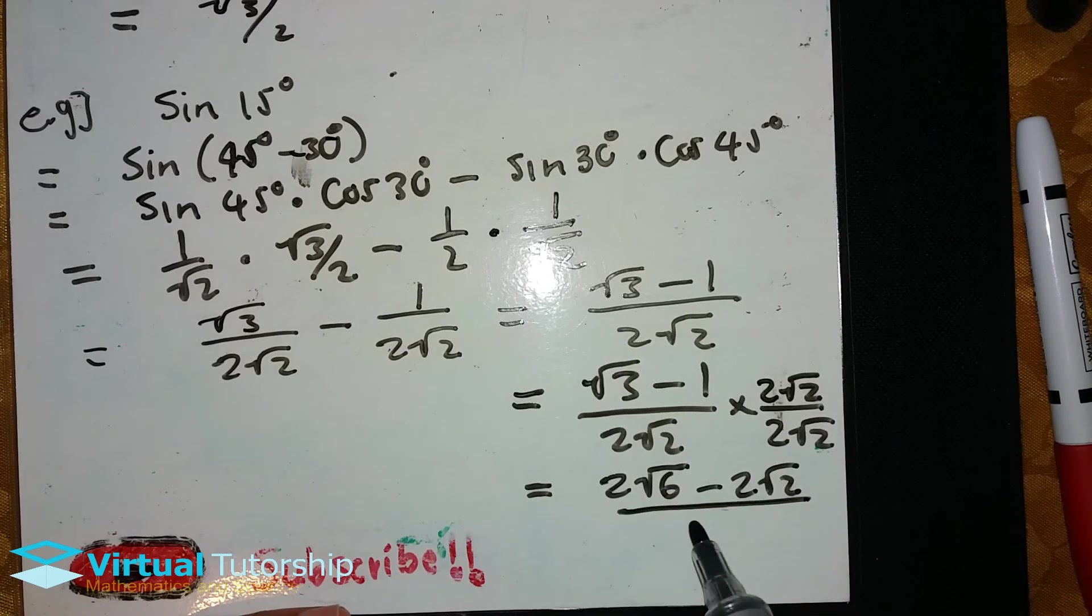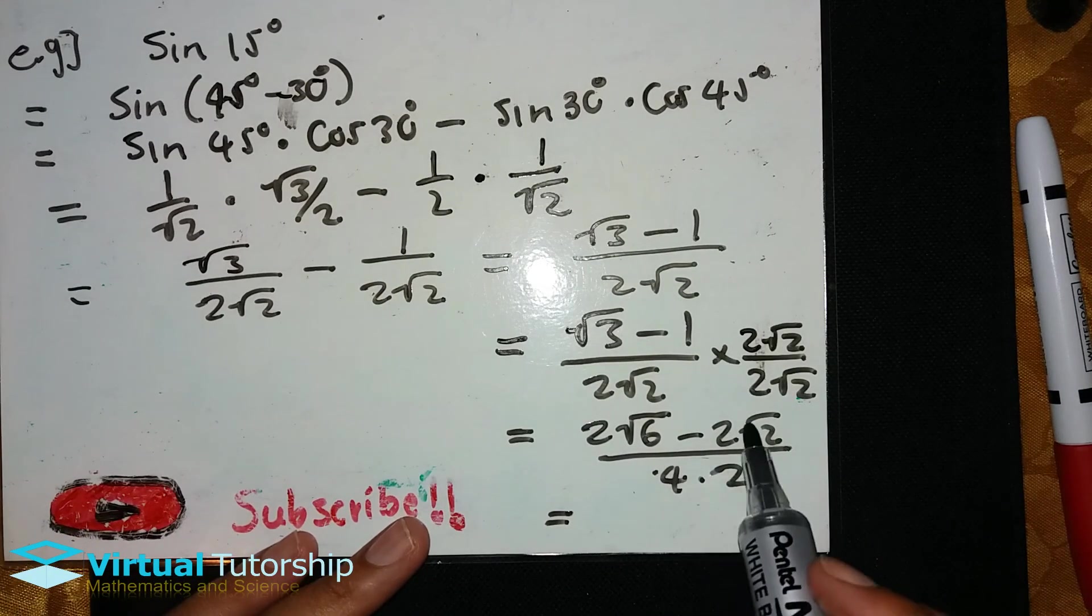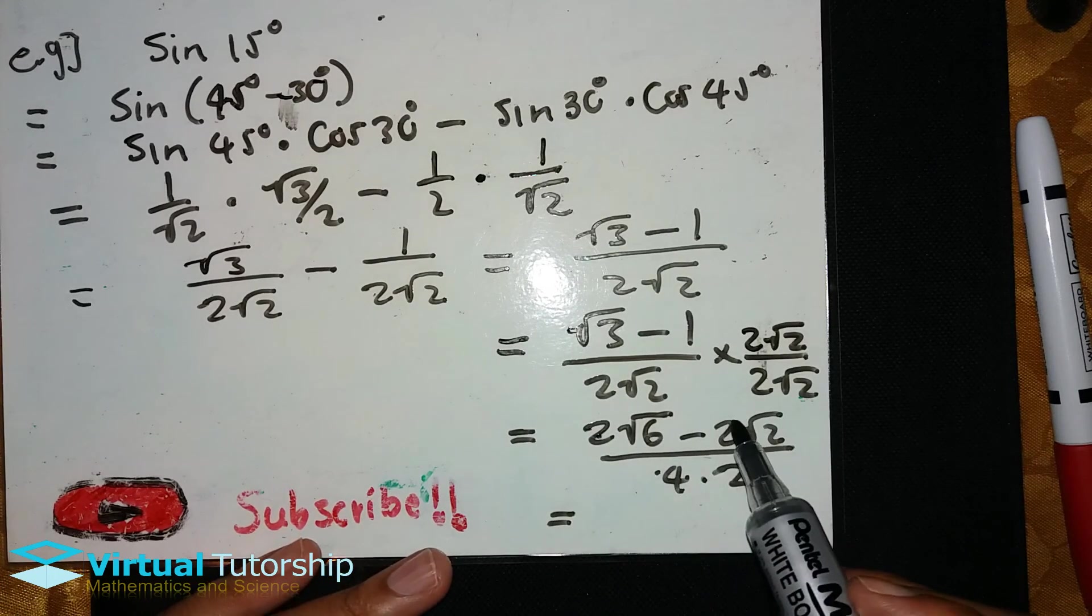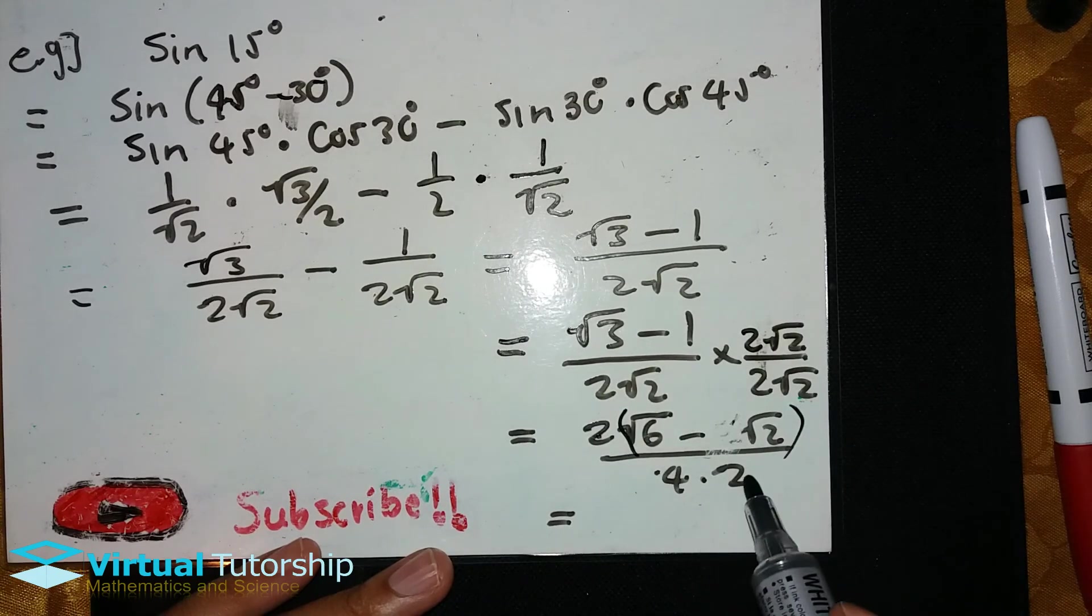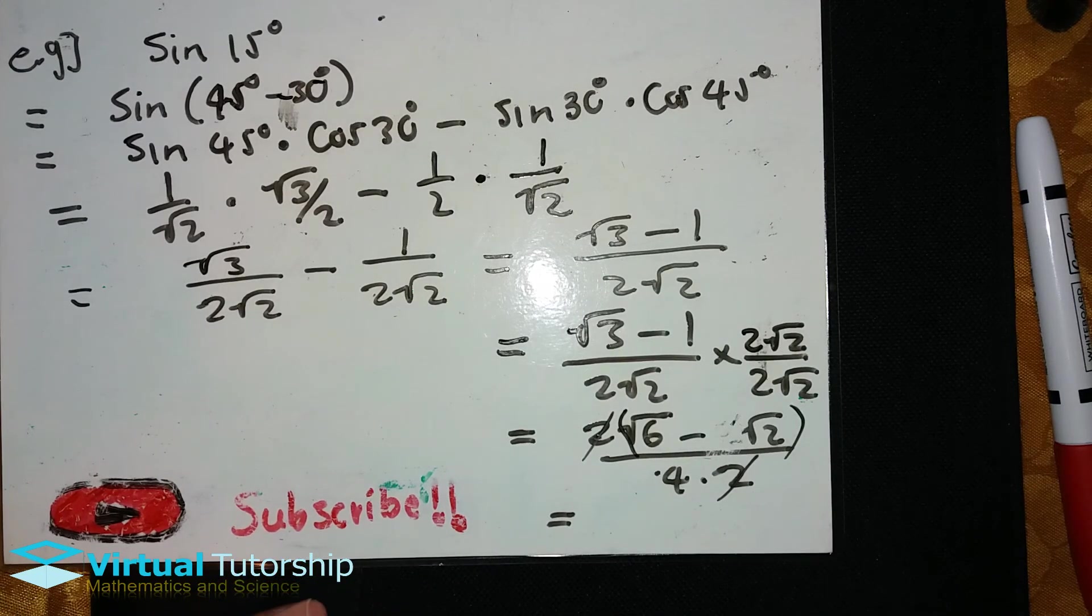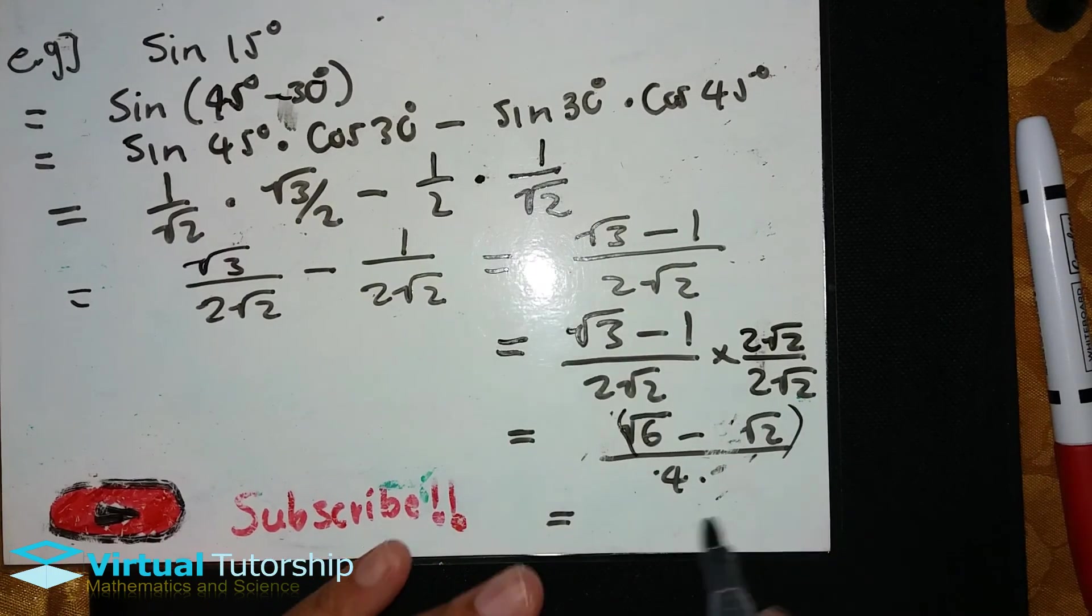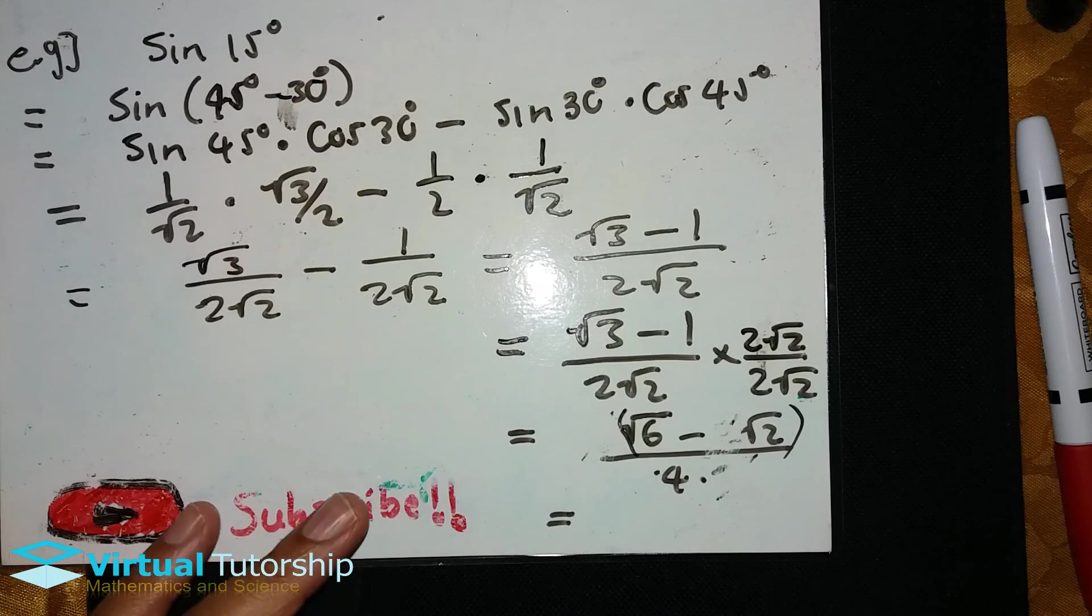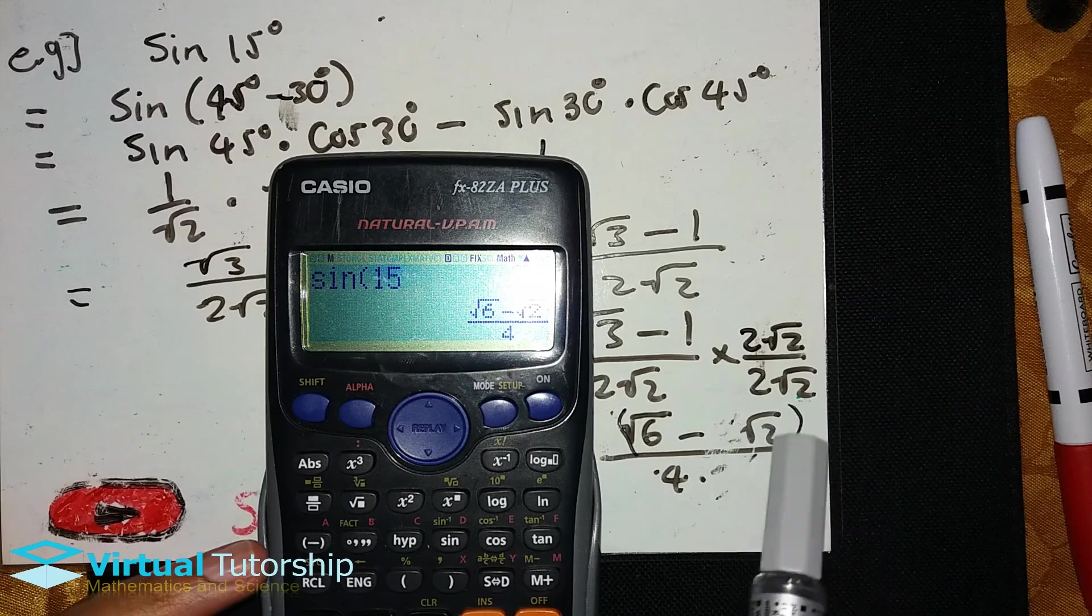So 4 times 2 equal to. This common factor of 2 we can factor out. The common factor of 2 we can cancel, and we're left with square root 6 minus square root 2 over 4. So the sine of 15 degrees is equal to this.